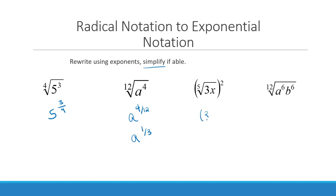We would rewrite the fifth root of (3x)² as 3x to the 2/5 power. Notice I wrote 3x in parentheses — that's very important, because if I hadn't, only the x would be raised to that power and not the 3. For the twelfth root of (ab)^6, this could be written as a to the 6/12 and b to the 6/12, or alternatively (ab) to the 6/12 power — that means the same thing as long as it's in parentheses.